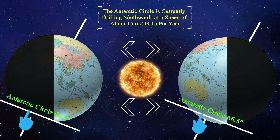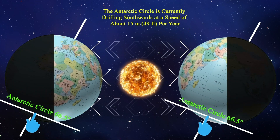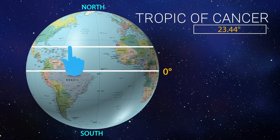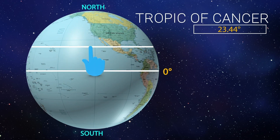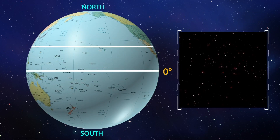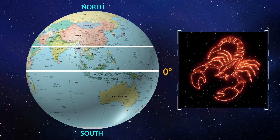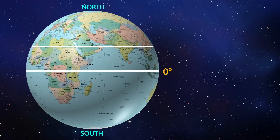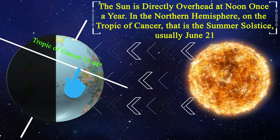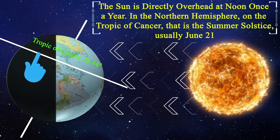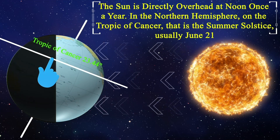The Antarctic Circle is currently drifting southwards at a speed of about 15 meters (49 feet) per year. The Tropic of Cancer is the line of 23.44 degrees north latitude. It was named because the sun passed overhead at this location at the time of year when it was within the zodiac sign of Cancer. The sun is directly overhead at noon once a year in the northern hemisphere on the Tropic of Cancer — that is the summer solstice, usually June 21st.